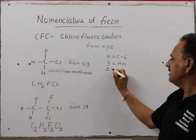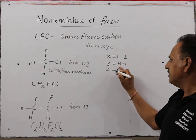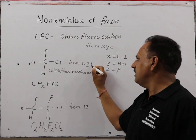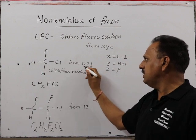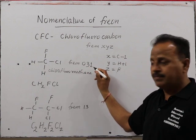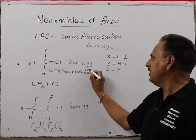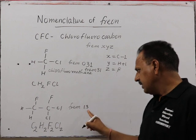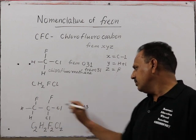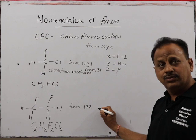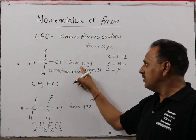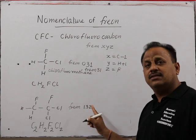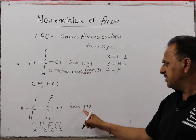Z is the number of fluorine atoms. If there is 1 fluorine, it is Freon 0, 3, 1 — or simply Freon 31. If there are 2 fluorines, it is Freon 1, 3, 2. So the three numbers represent carbon, hydrogen, and fluorine respectively.